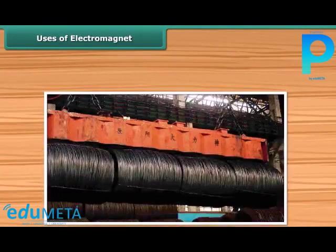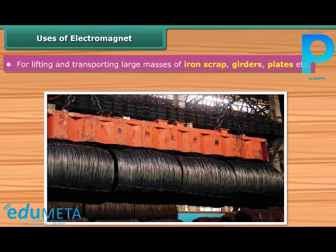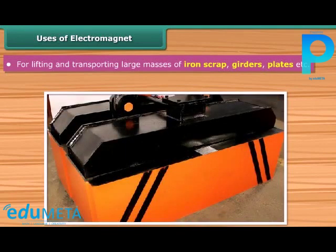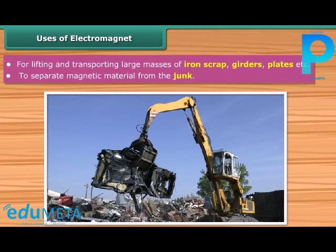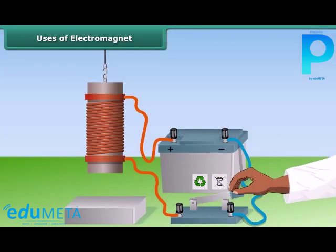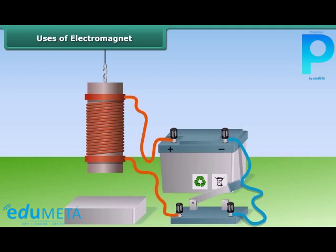You must have observed cranes lifting heavy iron scraps in a scrap yard. These cranes make use of electromagnets for lifting and transporting large masses of iron scrap, girders, plates, etc. Electromagnets are also used to separate magnetic material from junk. The main advantage of electromagnets over normal magnets is that they can easily start and stop, and the strength of the magnetic field can be effectively controlled.